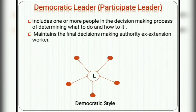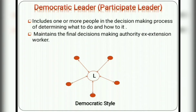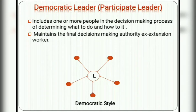The next is the democratic leader, also called participative leader — opposite to the autocratic leader. It includes one or more people in the decision-making process. Whatever the target or work, they take the opinion, ideas, and planning from their employees. The leader maintains final decision-making authority. An example is the extension worker — whatever final decisions are made, they are considered together with the subordinates.